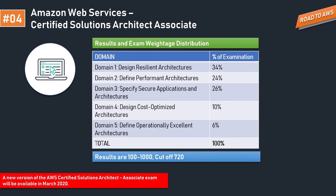The results and exam weightage distribution covers five domains: Design Resilient Architecture carries the highest at 34%, Define Performant Architecture covers 24%, Specify Secure Application and Architectures covers 26%, Design Cost-Optimized Architecture covers 10%, and Define Operationally Excellent Architecture covers 6% — totaling 100%. Scores range from 100 to 1000 and the passing cutoff is 720. At the test center you'll get an AWS registration ID, and after completing the exam and a brief survey, you'll receive a pass/fail result immediately, though detailed scores arrive one to two days later.